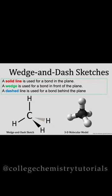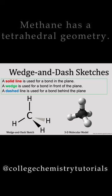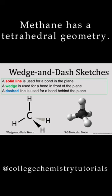A common way to represent three-dimensional structures is by using the wedge and dash sketch. I'll use the simple example of methane here. Methane has a tetrahedral geometry, which is evident in the 3D model.